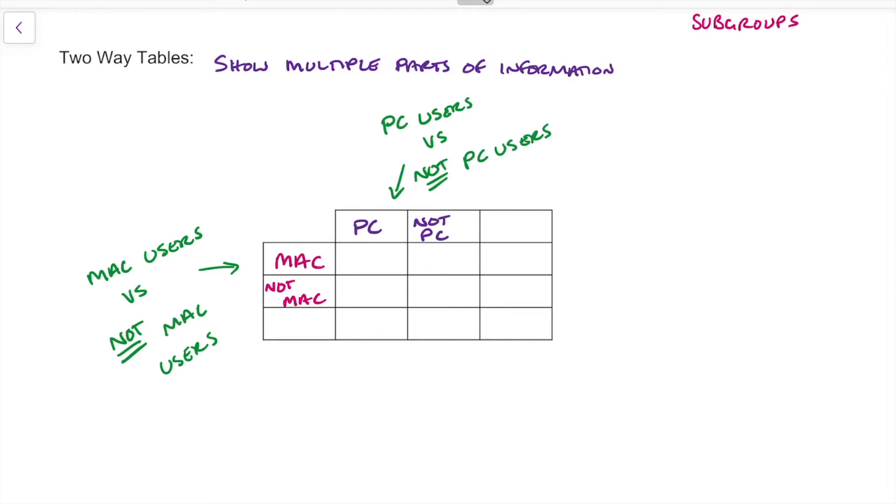So we're going to encompass all of that information into one thing. Now, you can see there I have another row and another column that don't have anything in them yet. That's because these are going to be our totals.